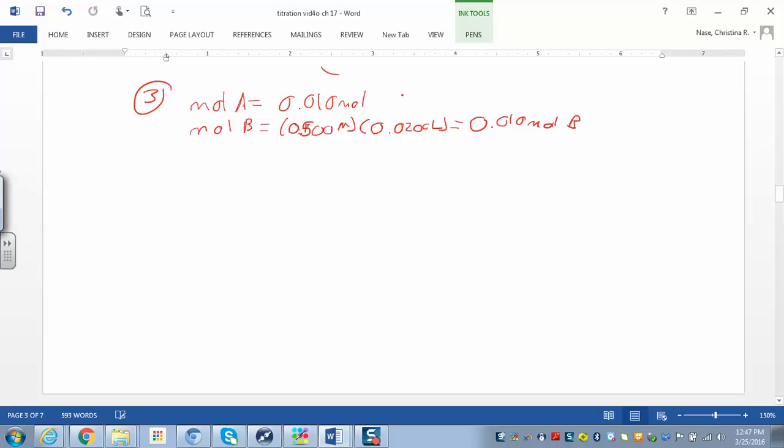So, what do you notice about the moles of the acid and the moles of the base? Looks like they're the same. So, what's this point called? This is called the equivalence point. And at the equivalence point, for strong acid and strong base, the pH is going to be 7.